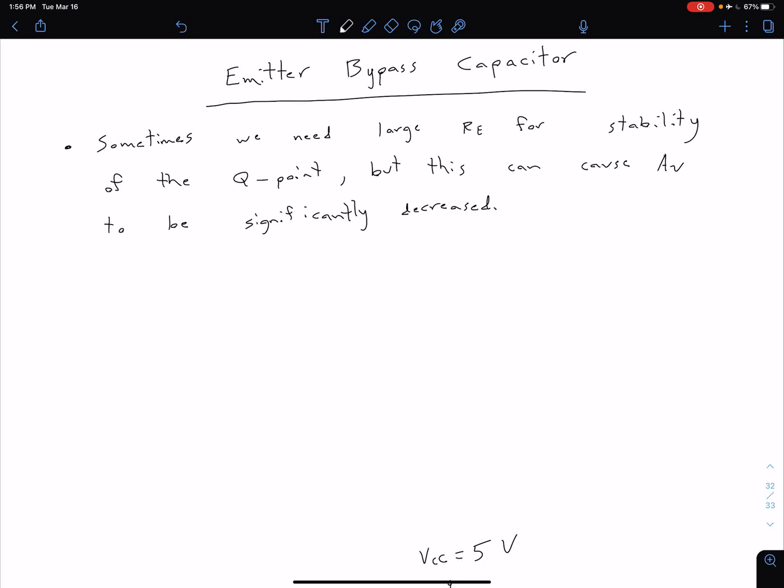What we've seen up to this point is that adding our emitter resistor can be very helpful. In terms of DC analysis, it can help us stabilize the Q-point against changes in beta. Oftentimes we would want to have this large emitter resistor value to keep that Q-point stable. But the flip side is that this can cause our small signal voltage gain to significantly decrease. It does have some benefit in that it's also causing that small signal voltage gain to stabilize, but we don't want to decrease that gain too much.